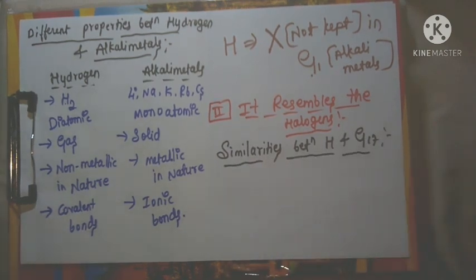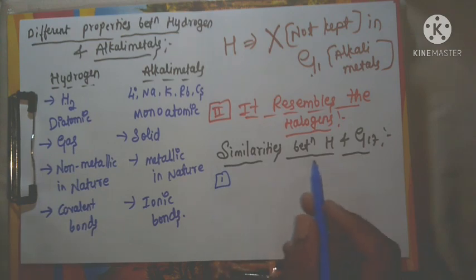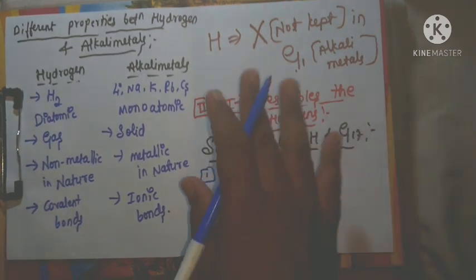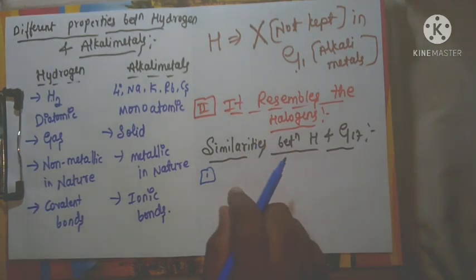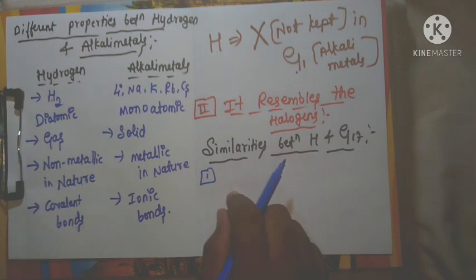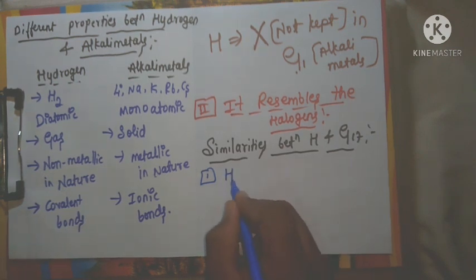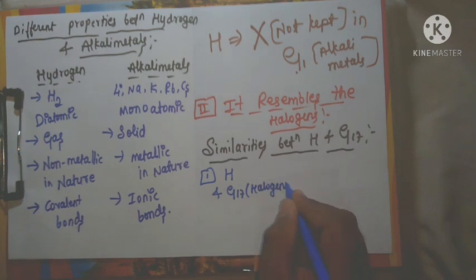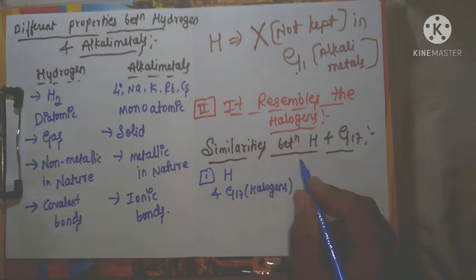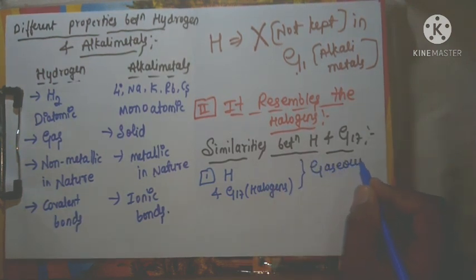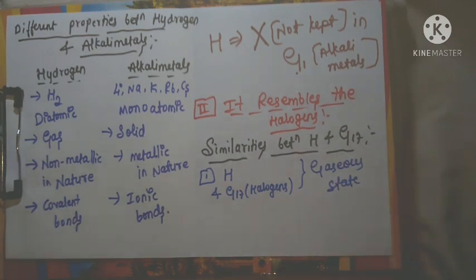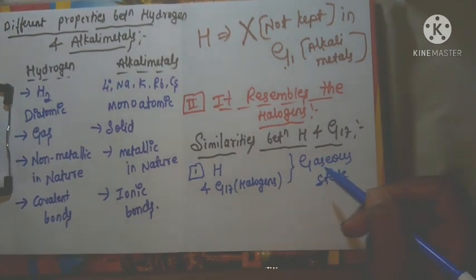The first similarity between hydrogen and halogens: both hydrogen and the 17th group elements exist in the gaseous state at room temperature. Both hydrogen and the halogens exist as gases. This is the first similarity between hydrogen and halogens.